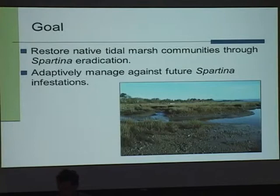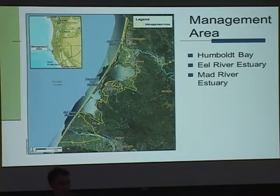We're currently finalizing the plan, so you'll be able to read about those details soon. The goals of the project are to restore native tidal marsh communities through Spartina eradication and to adaptively manage against future Spartina infestations throughout the management area, which is Humboldt Bay, the Eel River estuary to the south, and the Mad River estuary to the north.